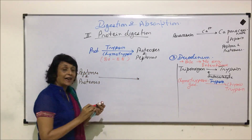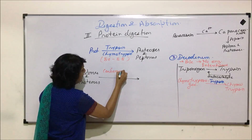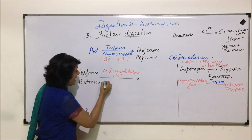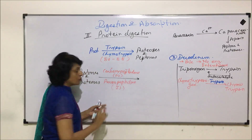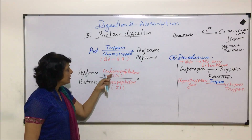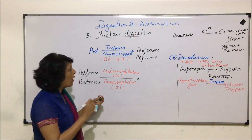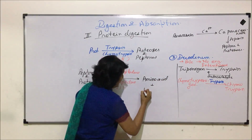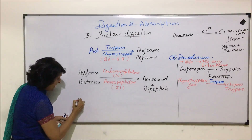These peptones and proteoses are then acted upon by other enzymes: carboxypeptidase, present in pancreatic juice, and aminopeptidase, present in intestinal juice. The pH remains the same at 8.6 to 8.8. Since these two are exopeptidases, they act on the terminal peptide bonds, producing amino acids and some dipeptides — slightly larger molecules with two peptide bonds.